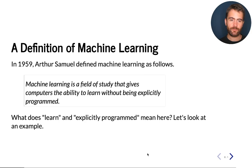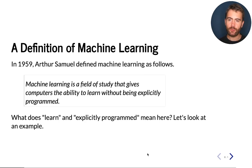The definition that he gave is the following: machine learning is a field of study that gives computers the ability to learn without being explicitly programmed. Now, this is a very precise definition, but some words here may not be very clear to you. In particular, what does 'learn' mean in this context, and what does 'explicitly programmed' mean?